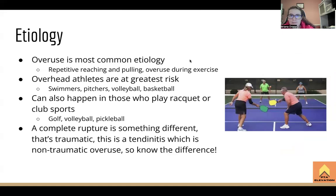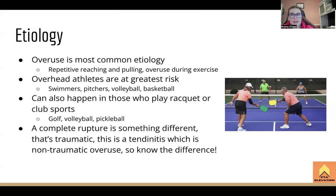Overuse is the most common etiology — repetitive reaching, pulling, overuse during exercise. This is huge in the athletic population. Overhead athletes are at very high risk: swimmers, pitchers, volleyball and baseball players. That overhead reaching impinges the subacromial space, giving you that rotator cuff and bicipital tendonitis kind of a two-for-one special through the long head of the biceps.